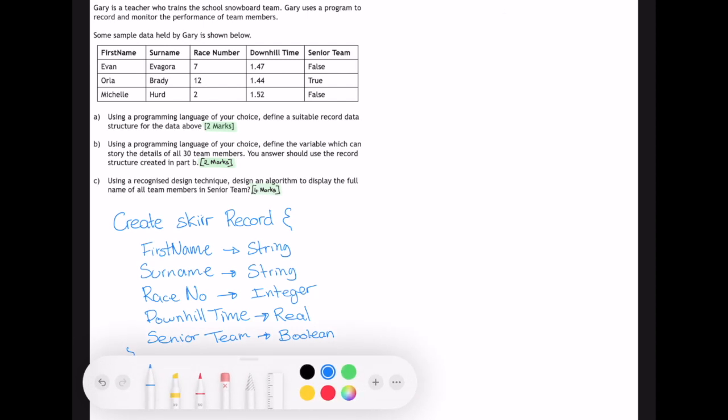Now the method that you use to implement a record structure will vary depending on the programming language that you know. From the point of view of the SQA, we're looking for the three things I specified at the start: the name of the record, the list of all the values that are going to be held in the record, and then the data type for each of those records.